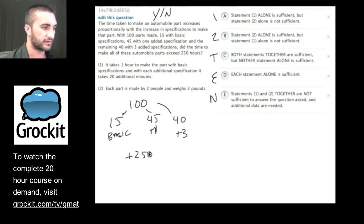Plus 250, yes or no? So let's take a look at statement one, and this is everything you're seeing me doing here is what I'm doing on my GMAT scratch pad. It takes one hour to make the part with basic specifications, so one hour for basic. And with each additional specification, it takes 20 additional minutes. So to do a plus one, it would take one hour, or one and a third hours to do a plus one. And it would take, to do a plus three, it should take us two hours, because one hour to make the basic parts, and 20 minutes for each additional specification. On plus three specifications, there's three additionals, so three times 20 will give us another hour, so two hours.